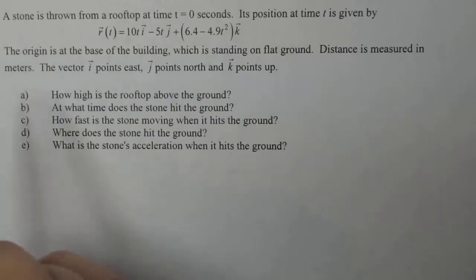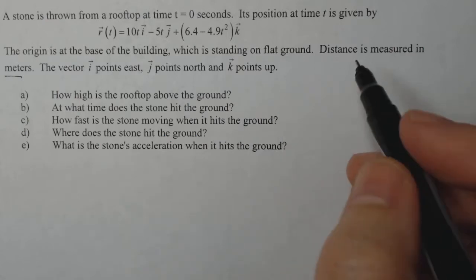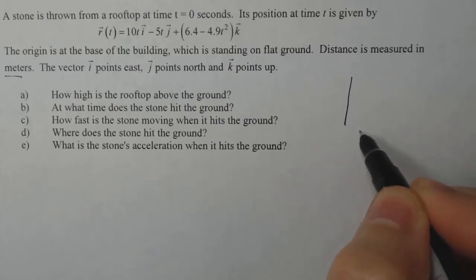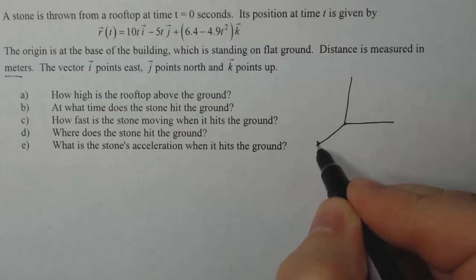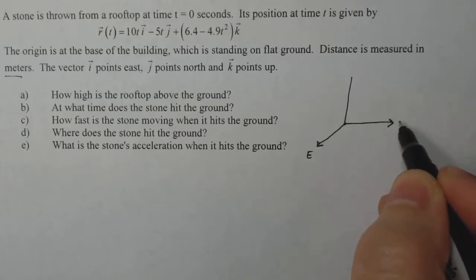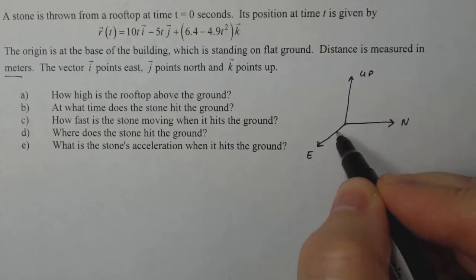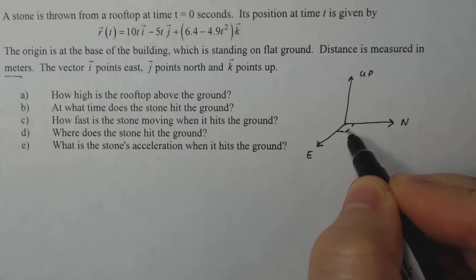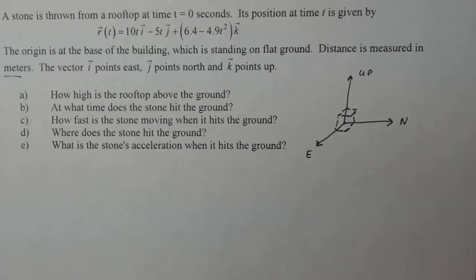Distance is measured in meters. The vector i points east, j points north, and k points up. So if I was to make a little sketch of this to remind myself at all times where I am, this direction is east, this direction is north, this direction is up. And my building is something like this in the corner down there.